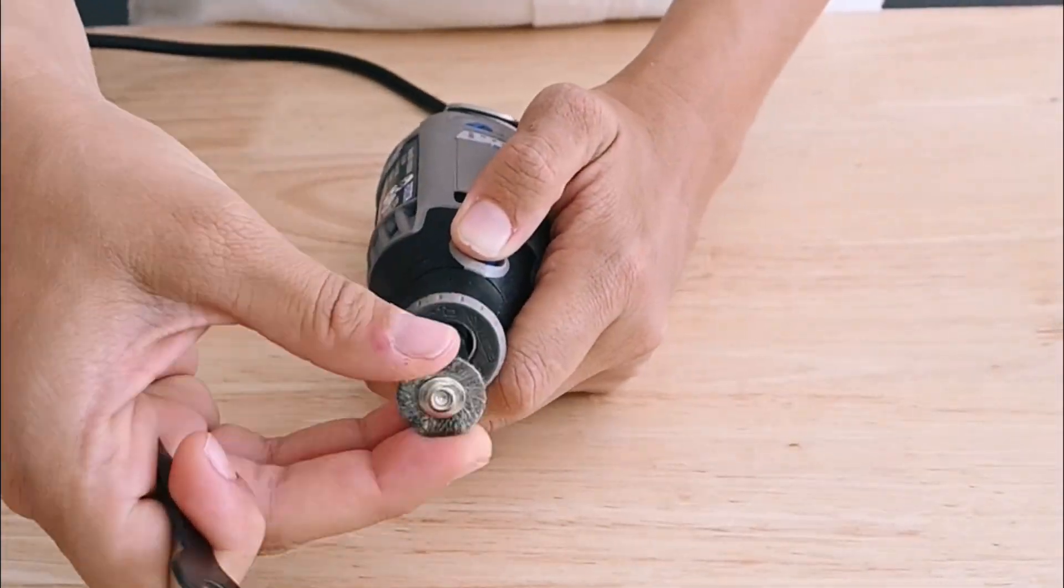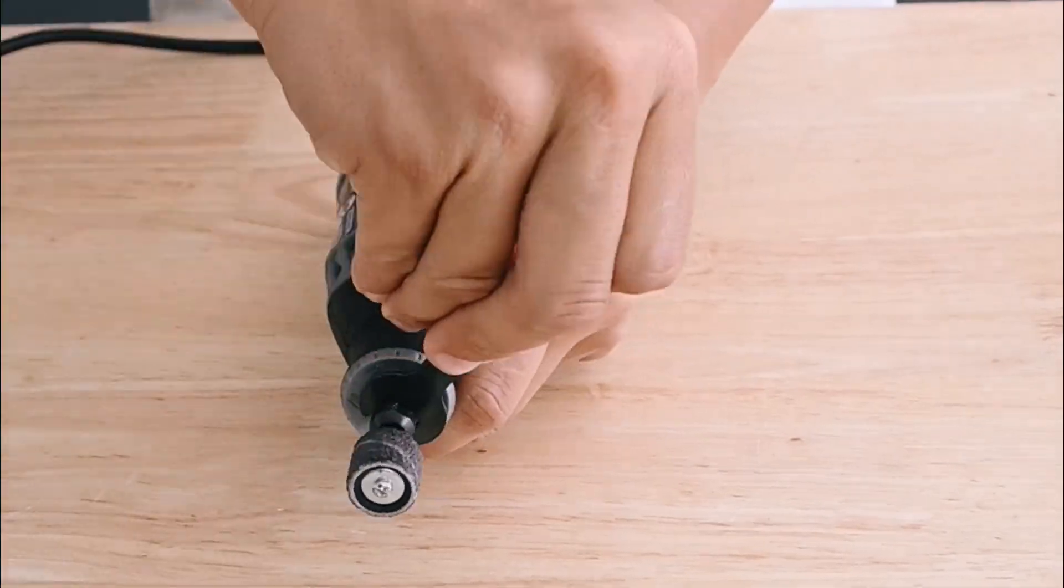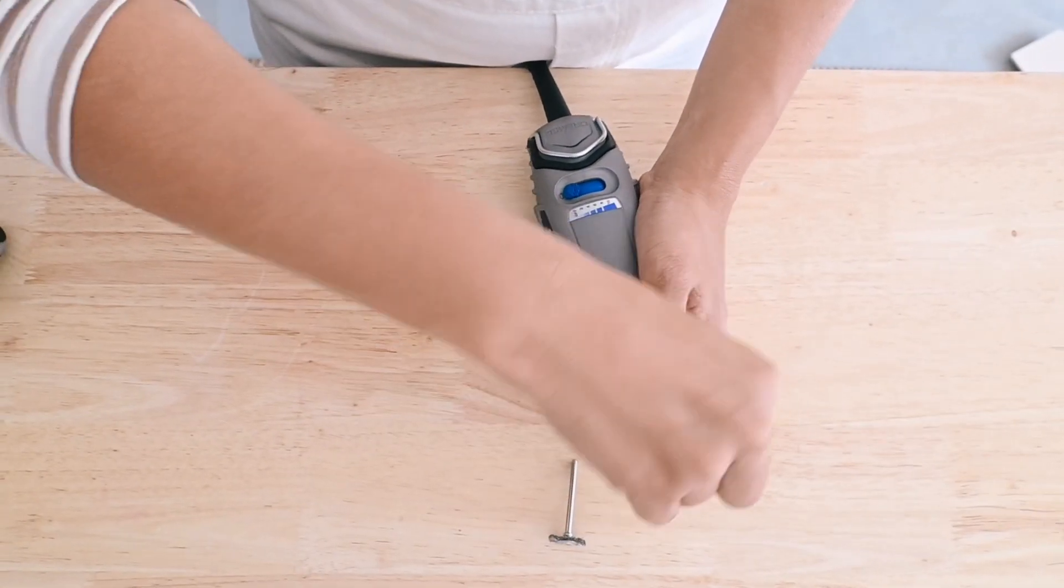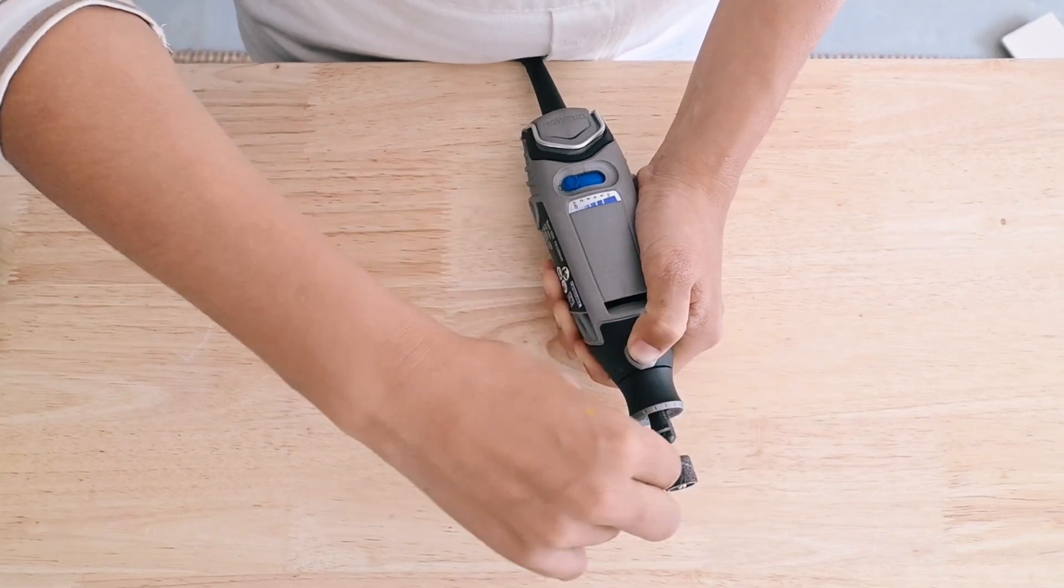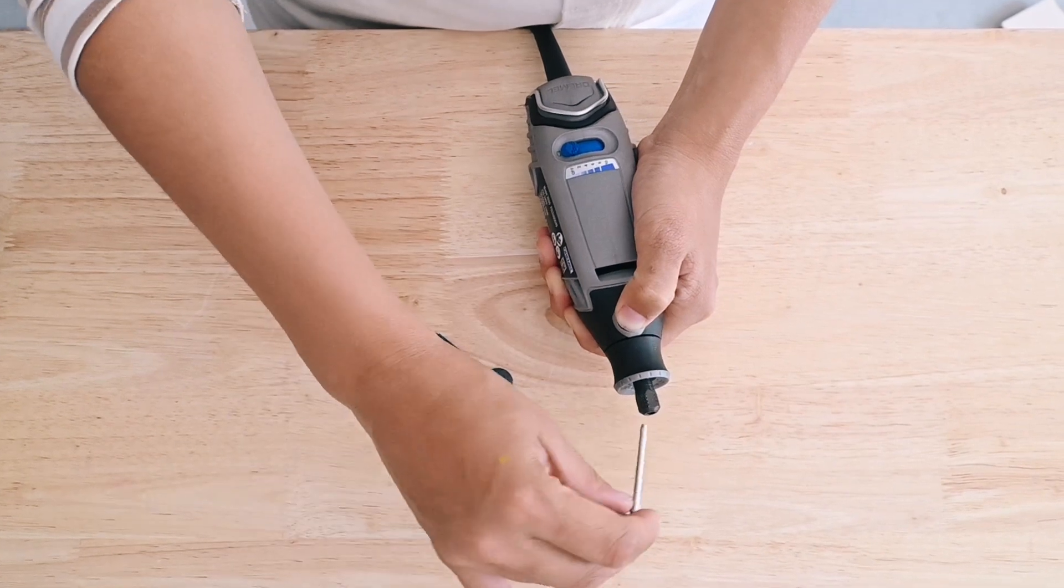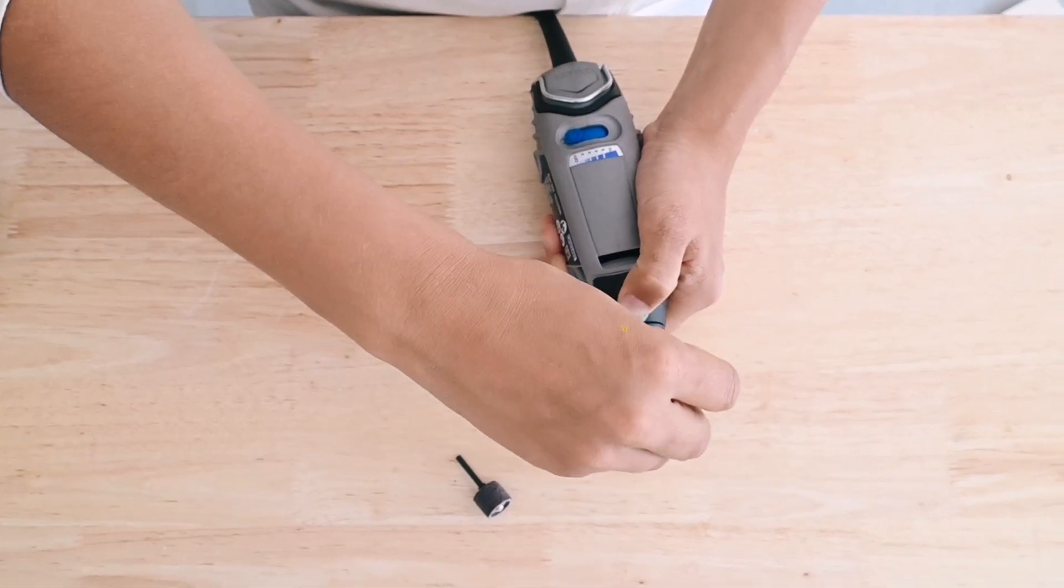The first thing to master with your Dremel is how to change out the different accessories. At the end of the Dremel is a part called the multi-chuck, and it's basically a little mouth that grabs onto the shaft of the Dremel accessory. That's what you're going to open and close in order to change out the different accessories that you want to use with your Dremel.